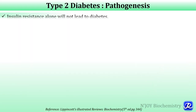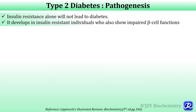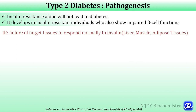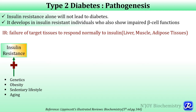Pathogenesis of type 2 diabetes involves insulin resistance, but insulin resistance alone will not lead to diabetes; type 2 diabetes develops in insulin-resistant individuals who also show impaired beta cell function. Insulin resistance is the failure of target tissues to respond normally to insulin; the target tissues are liver, muscle, and adipose tissue. As a result of insulin resistance, there is hyperglycemia as well as increased free fatty acid in the circulation. Insulin resistance can develop because of various factors like genetics, obesity, sedentary lifestyle, and aging.